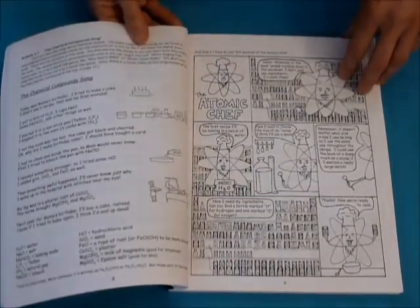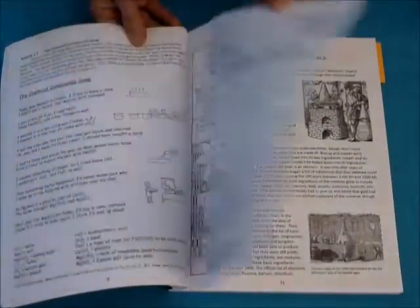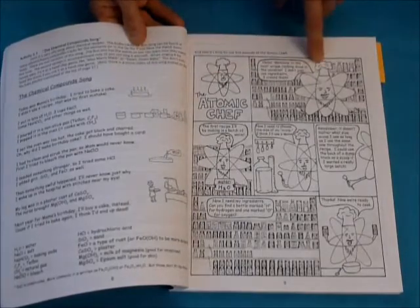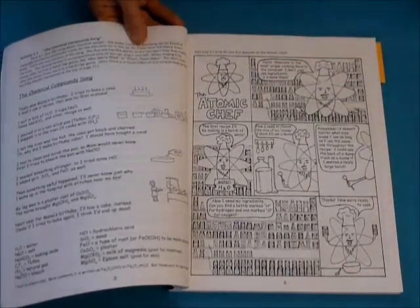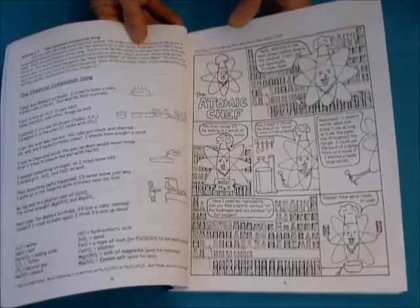And then every chapter ends with an episode of The Atomic Chef. A little two page episode where The Atomic Chef reviews some concept we learned in the chapter and then does something completely silly and ridiculous and the kids just love it.